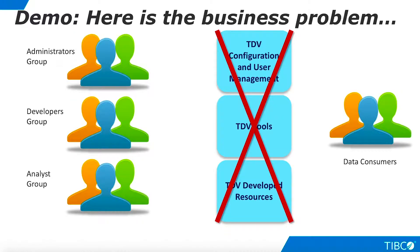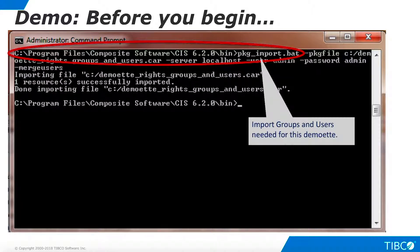In this demo we use three different TDV groups with different rights settings. To prepare, use the TDV package import command line utility to import the required groups and users. The GUI-based import capability cannot be used because it does not provide fine-grained control over import of groups and users. In the additional resources accompanying this demoette you will find the CAR file along with instructions and a sample command line. Note that the command line export and import utilities require at least one TDV resource; a folder called 'dummy resource' will be installed in the shared portion of the TDV namespace after you run the import.